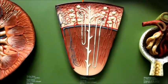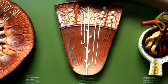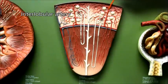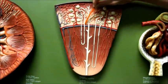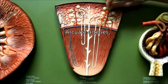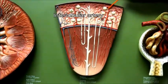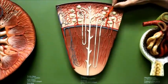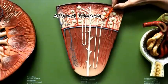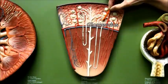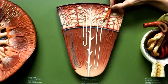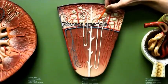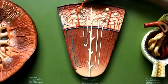Now for the blood vessels. The arcuate artery branches to form the interlobular artery. The interlobular artery then branches, and this branch is called the afferent arteriole. The afferent arteriole then forms the glomerulus of the renal corpuscle, and coming out on the other end is the efferent arteriole.